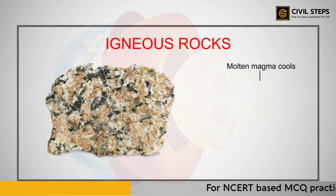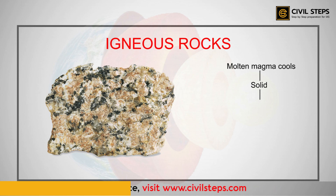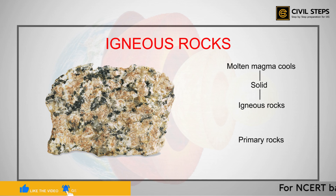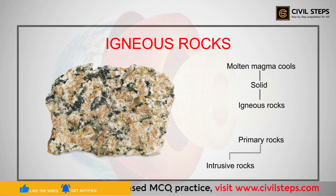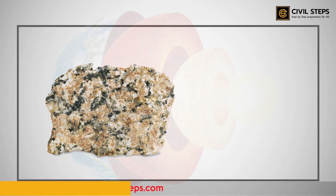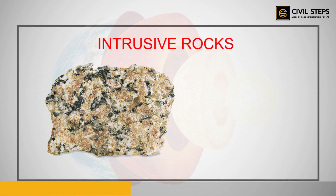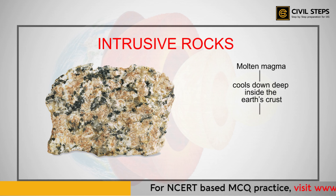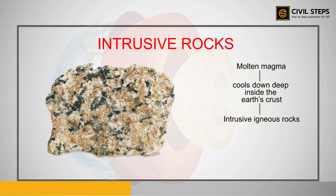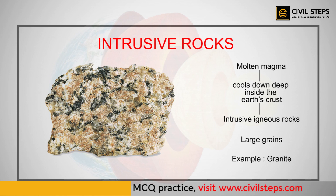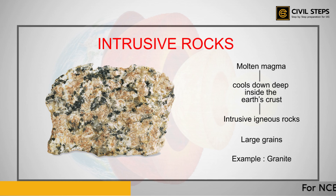When the molten magma cools, it becomes solid. Rocks formed this way are called igneous rocks — also called primary rocks. Igneous rocks are further divided into two types: intrusive rocks and extrusive rocks. When molten magma cools down deep inside the Earth's crust, the solid rocks formed are called intrusive igneous rocks. Since they cool down slowly, they form large grains. An example is granite — grinding stones used to prepare paste or powder of spices and grains are also made of granite.